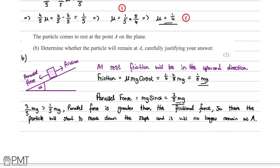In this part there were two marks available. The first mark is for comparing the frictional force with the parallel force, and the second mark is for using this comparison to reach the appropriate conclusion: that the particle will not remain at point A.